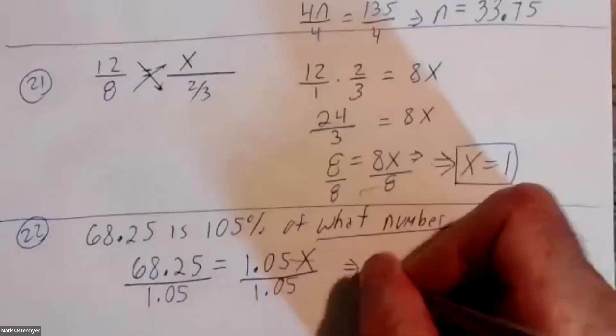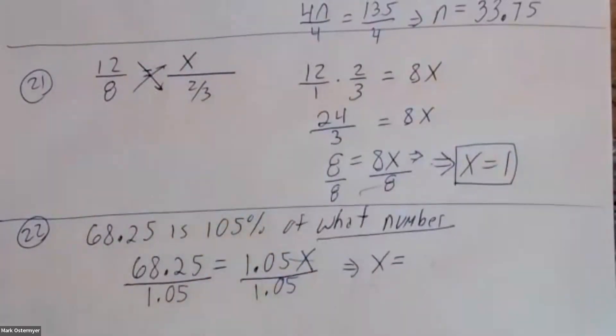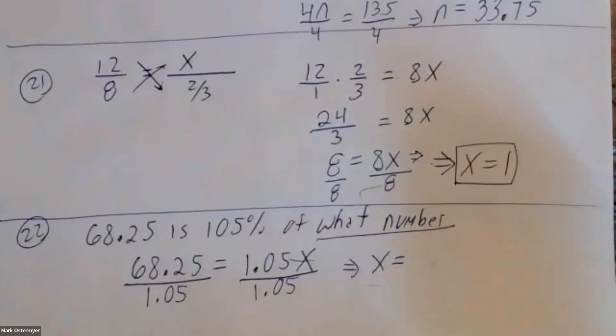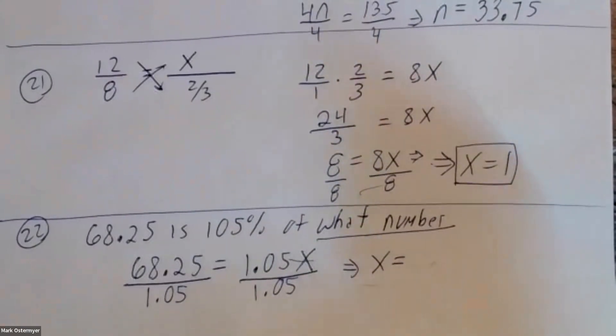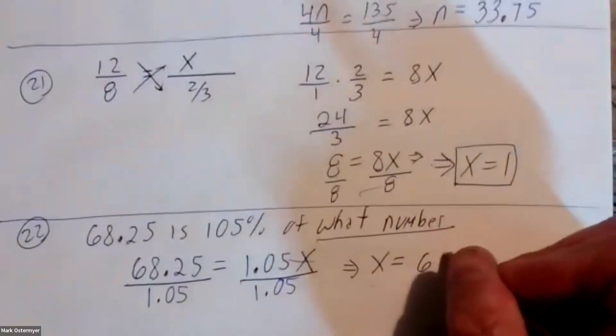Divide both sides by 1.05. This implies that x equals sixty-eight point twenty-five divided by 1.05, which gives sixty-five. So x equals sixty-five.